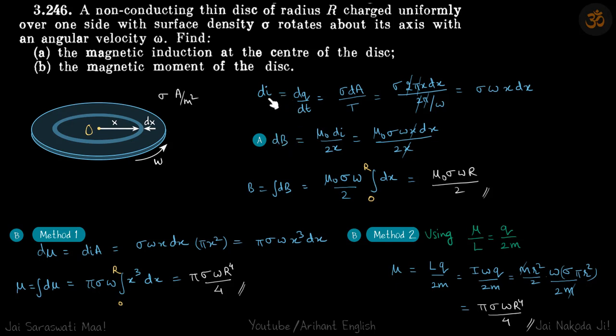di equals dq by dt. Small charge dq through this strip is sigma da, and that charge crosses in one time period. So dq by dt is sigma da divided by time period. da is 2πx dx and time period is 2π by omega. So this is your di.